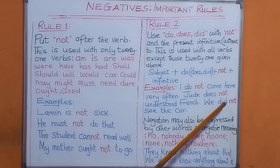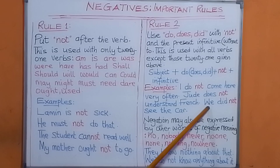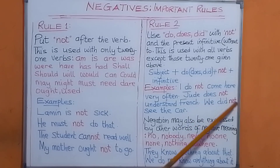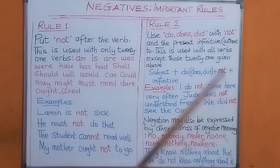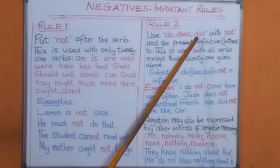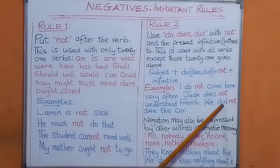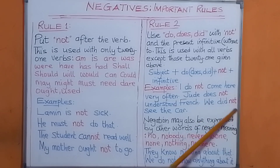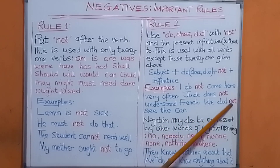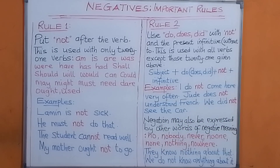Look at this: 'We did not see the goal.' 'We' is the subject, 'did' is the verb, then 'not'. 'We did not see the goal.' You see that?